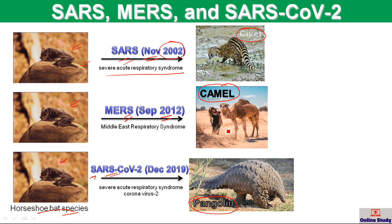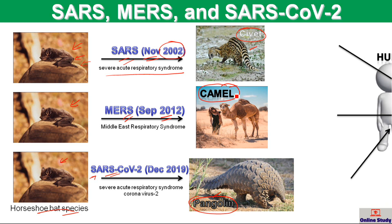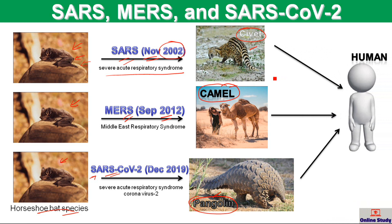All three — the civet, the camel, and the pangolin — are mammals. The bat is also a mammal. So the bat infected the civet, camel, or pangolin, and then the civet, camel, or pangolin infected the human. This is the way that every coronavirus was introduced into humans: from the bat to an intermediate mammal, and then to humans.